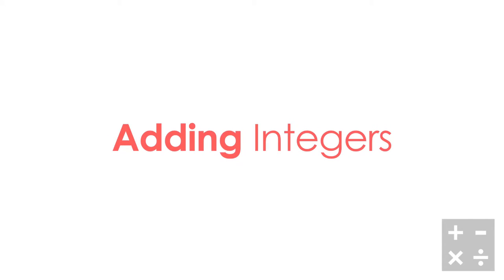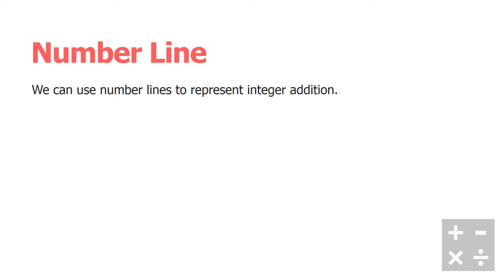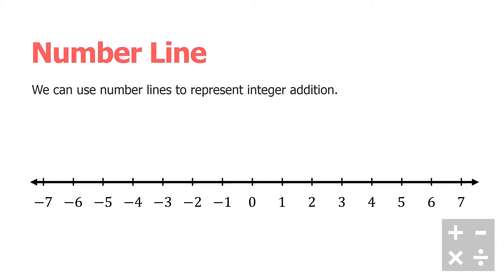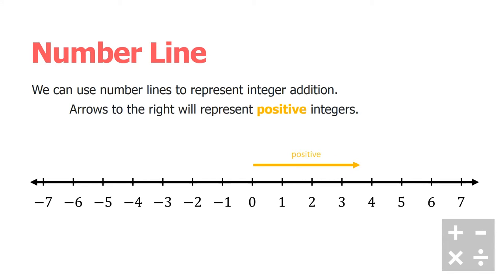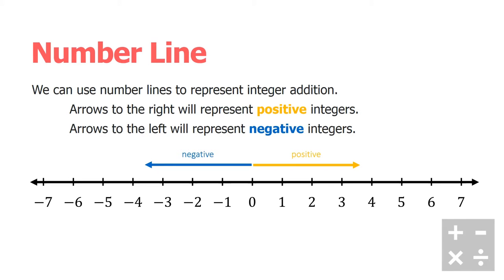Let's take a look at adding integers. In this video, we're going to use a number line instead of integer chips. We can use number lines to represent integer addition and subtraction. On our number line, I'm going to use yellow to represent positive integers, which always have arrows going to the right, and blue to represent negative integers, which go to the left.